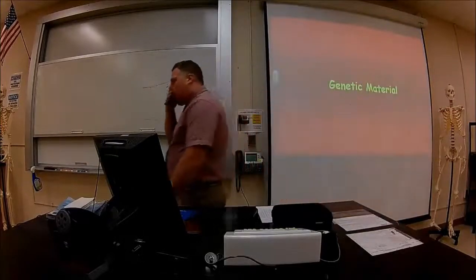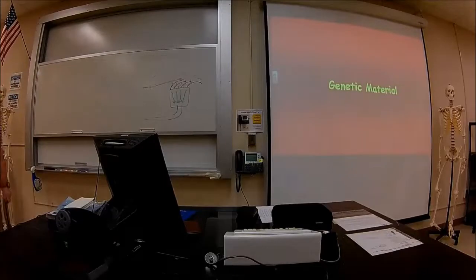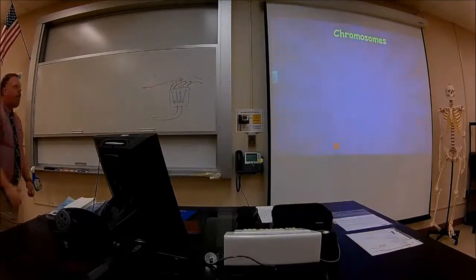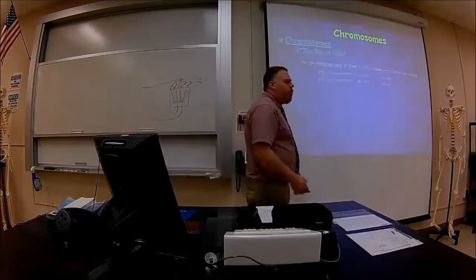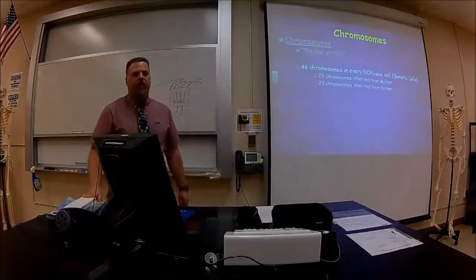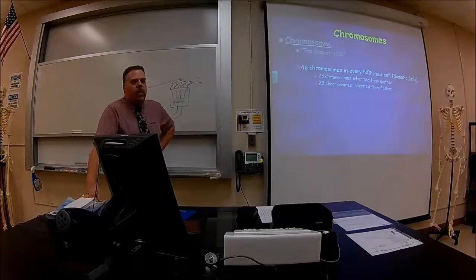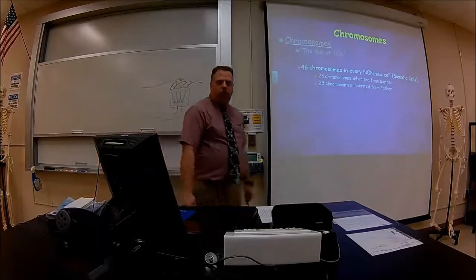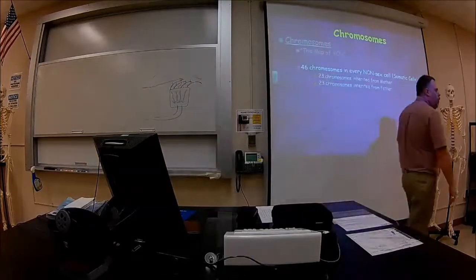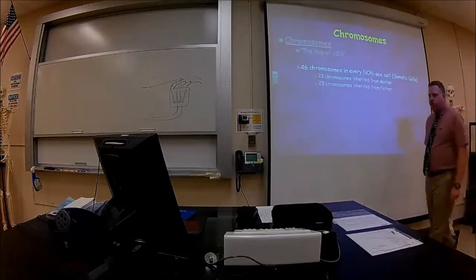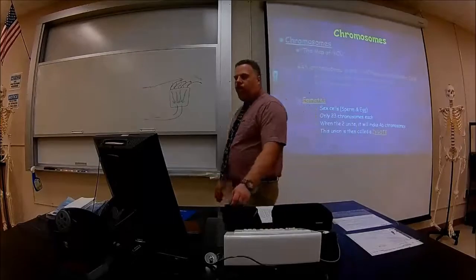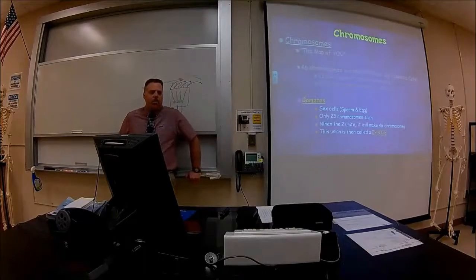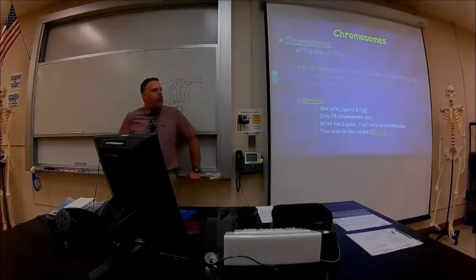Alright, so let's talk about genetic material. Now we're getting nitty-gritty. We talked about the chromosomes versus chromatin, the chroma and chromatids and so forth. This is the map of view. We have 46 chromosomes in every non-sex cell. Non-sex cells are also referred to as somatic cells. You've got 23 chromosomes that you've got from mom and 23 chromosomes you got from dad, making 46. The gametes are the sex cells.